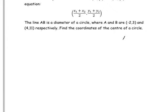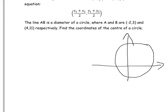What this means is we've got a little grid, and we've got a circle, and we've got our two coordinates. We've got our (-2, 3), which will be somewhere over here, and we've got our (4, 11), which is somewhere over here.